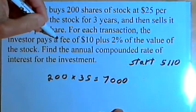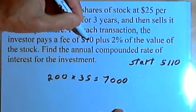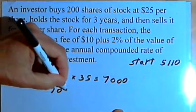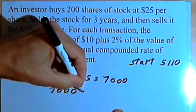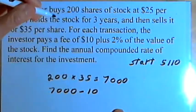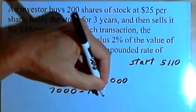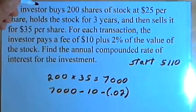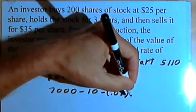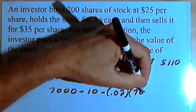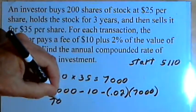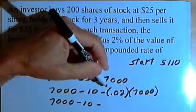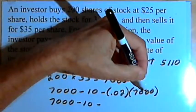But once again, there was a fee. He had to pay $10 plus 2% of the value of the stock. So he had that $7,000, but he had to pay $10, so that's minus $10. And he also had to pay 2% or 0.02 times the value of the stock, which was $7,000.